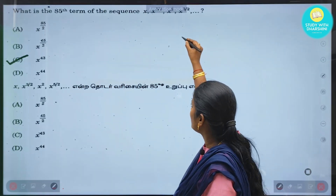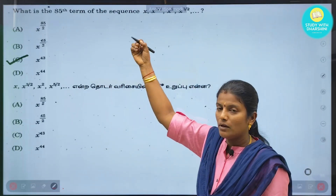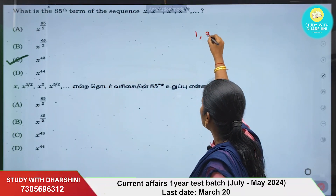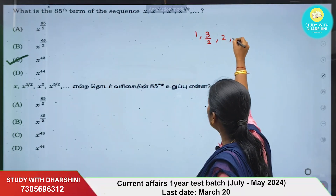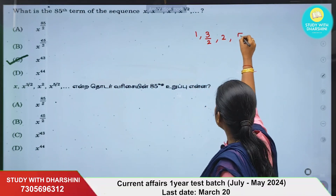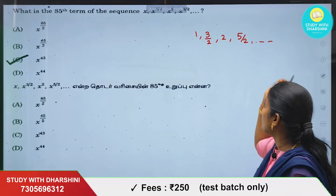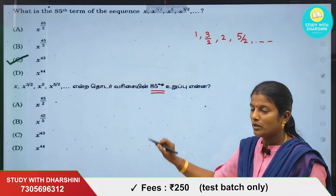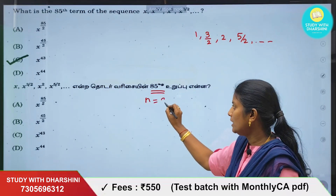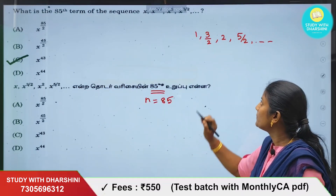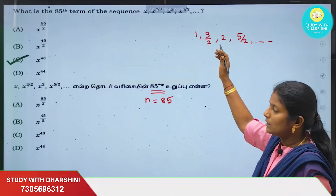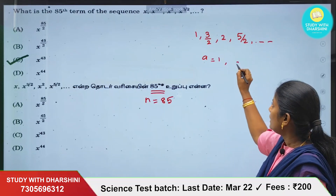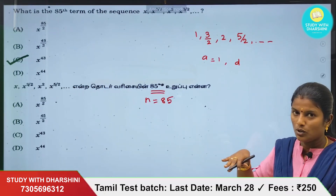The powers are: x^1, x^(3/2), x^2, x^(5/2), etc. So the powers are 1, 1.5, 2, 2.5... forming an AP. Here n is 85 (given), a equals 1, and d equals 3/2 minus 1 = 0.5.